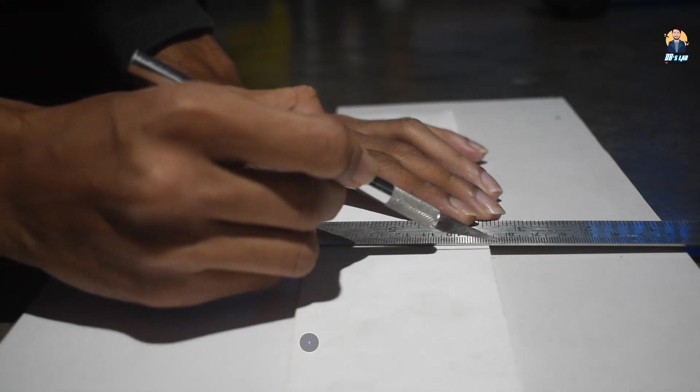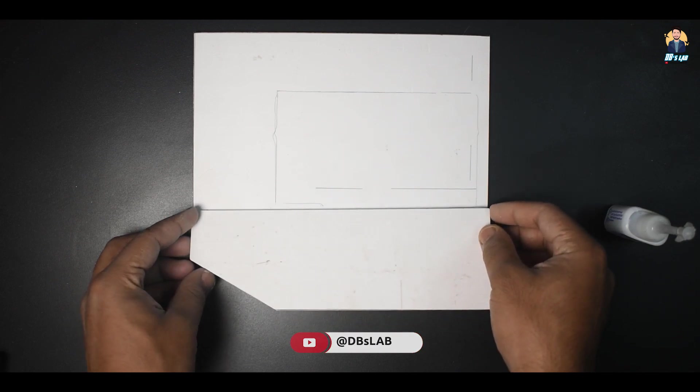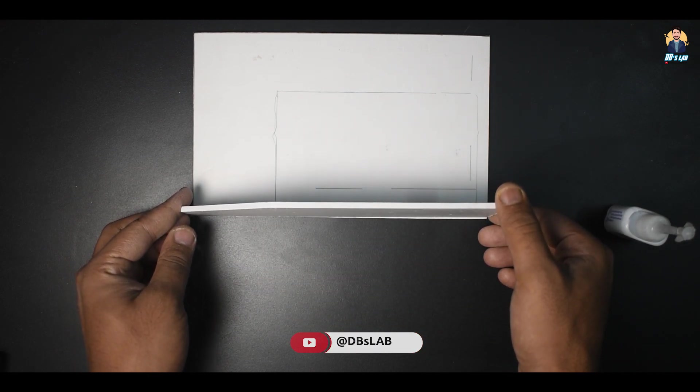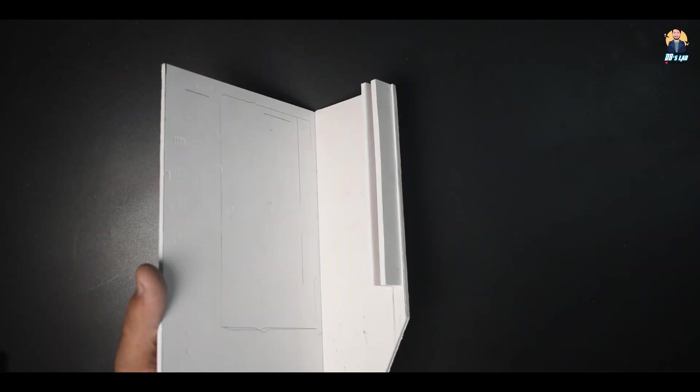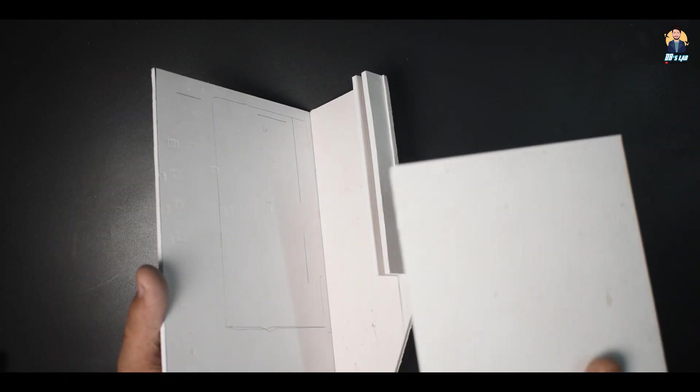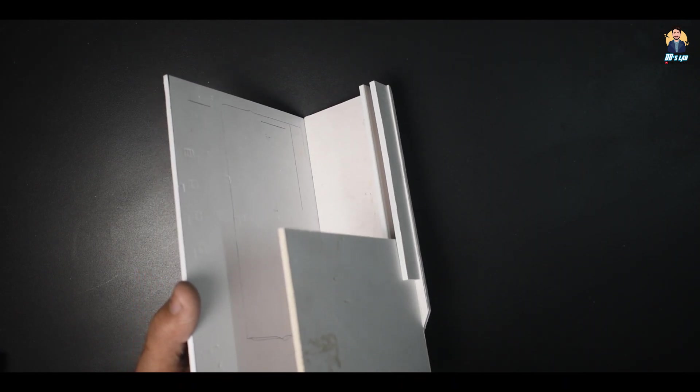Simply use an exacto knife or utility knife to cut them. Attach the sides to the bottom plate. Also attach the rails to the top of the sides. The gap between the two rails is 4mm in my case. It's equal to the thickness of the sunboard used.